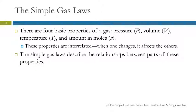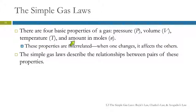There are four basic properties that we can measure for gases. Pressure is abbreviated with a capital P. Volume is abbreviated with a capital V. Temperature is abbreviated with a capital T. And we measure the amount of gas in moles, given the symbol N.